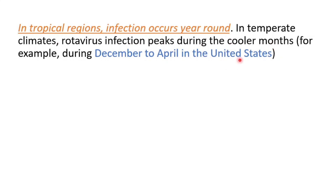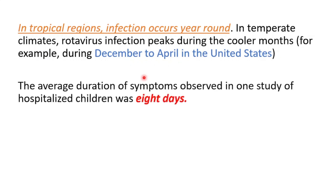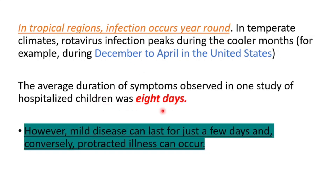In temperate climates, rotavirus infection peaks during the cooler months. For the United States, it is common during December to April. The average duration of symptoms observed in one study of hospitalized children was eight days. However, in mild disease it can last for just a few days, and conversely, protracted illness can occur.